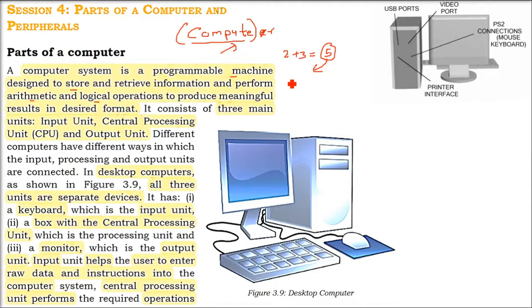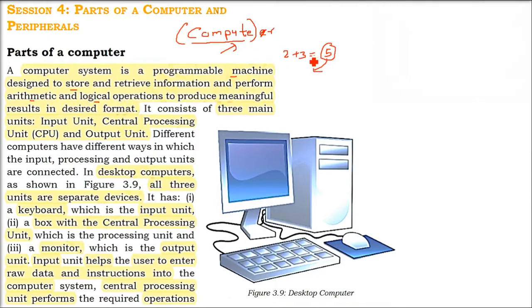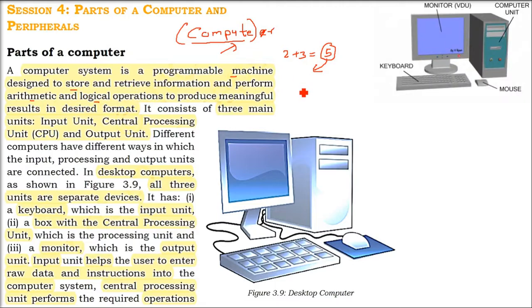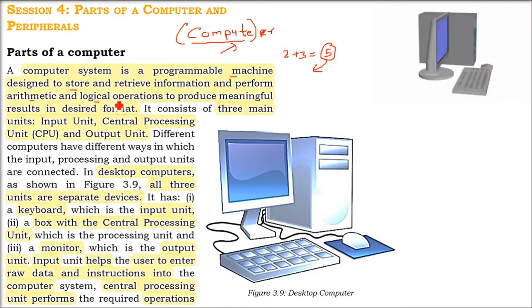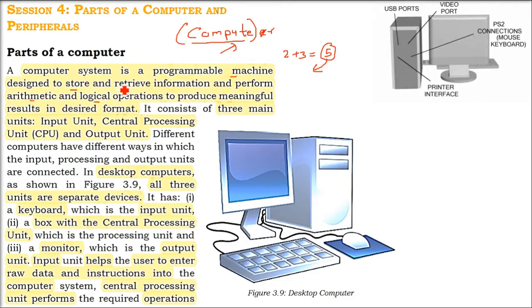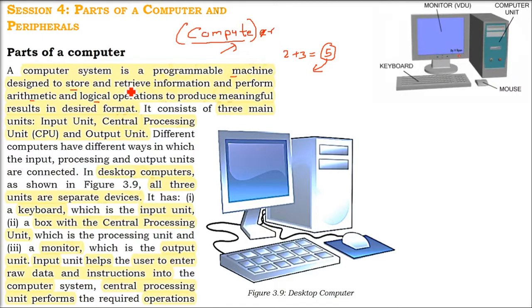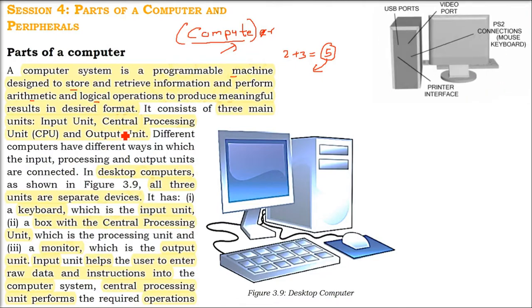So, computer system is a machine that is being made to do certain computation, to make your life comfortable, to do your all computation in a faster and logical way and then whatever data is there, it needs to store also and you can retrieve also later. So, there are 3 main parts of a computer.